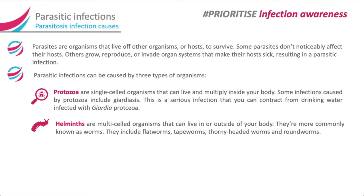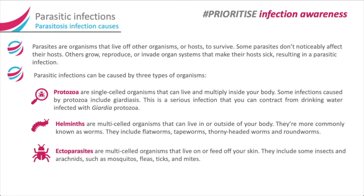Helminths are more commonly known as worms. They include flatworms, tapeworms, thorny-headed worms and roundworms. Ectoparasites are multi-celled organisms that live on or feed off your skin. They include some insects and arachnids such as mosquitoes, bees, ticks and mites.